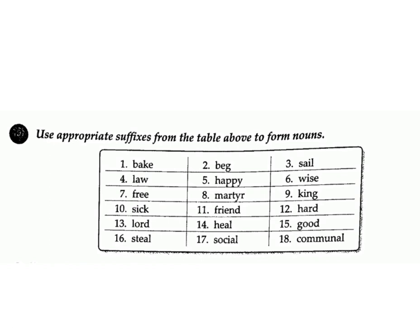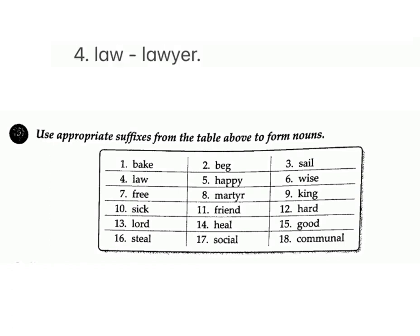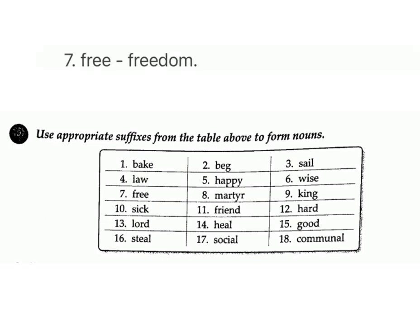D: use appropriate suffixes from the table to form nouns. 1. bake – baker; 2. beg – beggar; 3. sail – sailor; 4. law – lawyer; 5. happy – happiness; 6. wise – wisdom; 7. free – freedom.